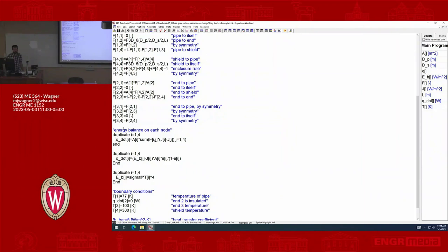So we see, okay, Q dot is equal to the area times the sum—this is the energy balance on the J nodes, the radiosity part of the node.